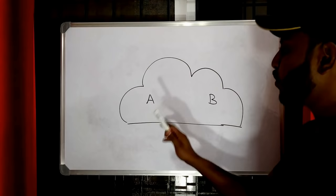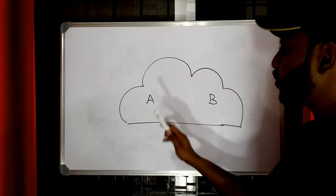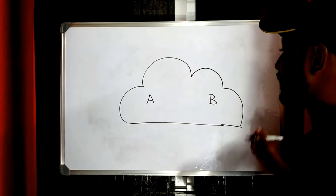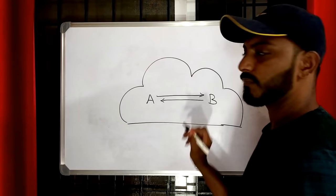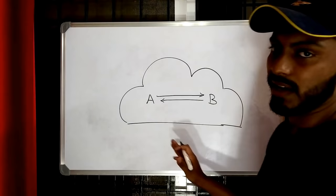Consider an ideal scenario where there are two clients, client A and client B. If these two want to exchange some information, client A knows the address of client B and client B also knows the address of A, so client A can send information to client B and vice versa. Consider this is a small network — they know each other's address. But what if this network is big? What if this network is the internet?